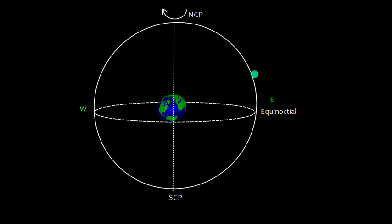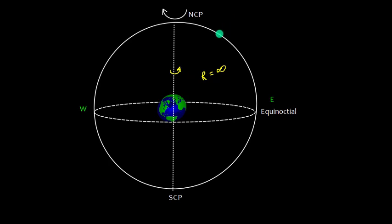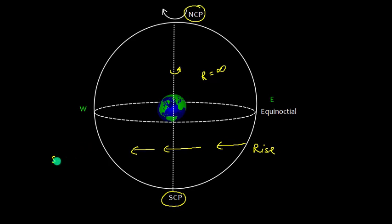Now let us talk about some introduction to the celestial sphere. Suppose this is the earth, and the earth rotates west to east about its axis. This is east and this is west. We can imagine that there is a celestial sphere of radius infinity, and it is going to rotate east to west. Since the earth rotates west to east, the apparent motion of this celestial sphere will be from east to west in the opposite direction. This is the north celestial pole and this is the south celestial pole. That is why all the celestial bodies rise in the east and set in the west.